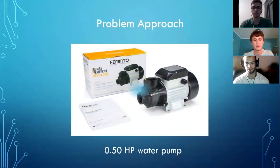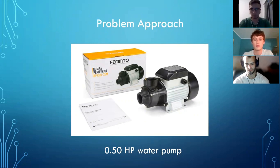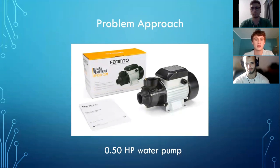After having analyzed the causes and consequences that water shortage has for La Santiago neighborhood, we believe that the implementation of water pumps in each home is a possible solution to this problem. These pumps can be used to easily fill the water tanks, which are normally located on the roof of the house at a height of 5 to 10 meters approximately. To achieve this, a 0.5 horsepower pump can be used, which pumps 30 liters per minute.